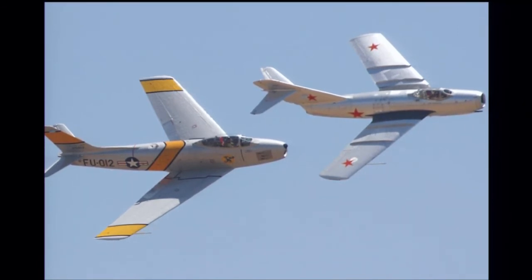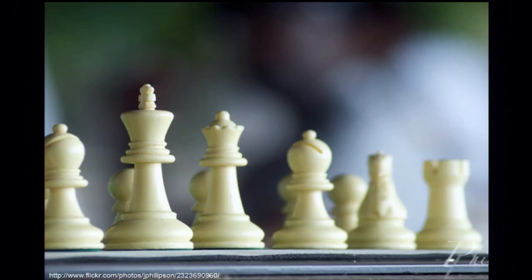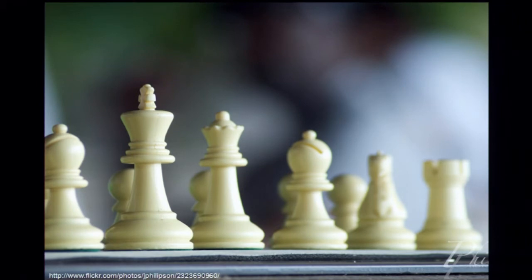Boyd created a concept called the OODA loop — Observe, Orient, Decide, Act. It's basically a decision-making loop. What Boyd discovered was that it's the speed of iteration through that loop that matters, not whether you're making the right move, but just that you're making a move really, really fast. This is really good news for people like me who often make wrong moves, because I don't have to be Steve Jobs — I just have to iterate quickly and find the right solution through trial and error. A better way to explain this is through chess: I'll bet I can beat anyone in this audience at chess if I get to take two moves for every one move you make. By reacting faster, I don't have to be as good — I just get to make progress through trial and error.